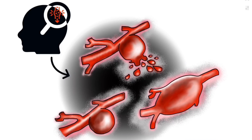There are many things that can cause aneurysms, but the main risk factors are smoking, age, hypertension, and other cardiovascular risk factors that cause atheromas or vasculitis. Things such as infection, trauma, or congenital disorders can also contribute to aneurysm formation.